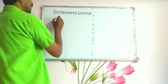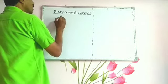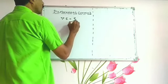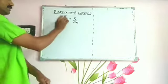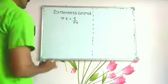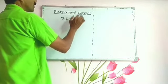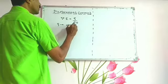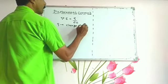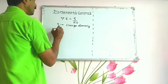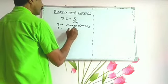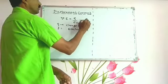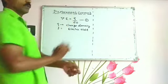In Electrostatics, the equation of Gauss Law is del·E = ρ/ε₀. This is the differential form of Gauss Law in Electrostatics, where ρ is the charge density and E is the electric field. This is our first equation.